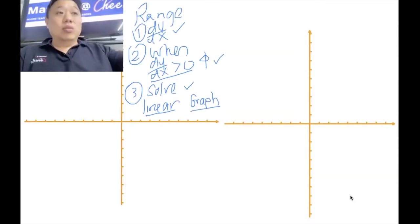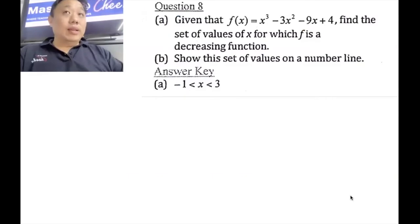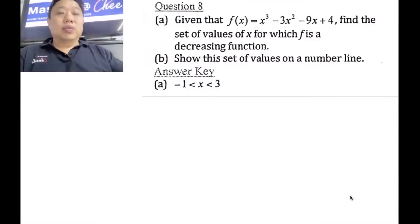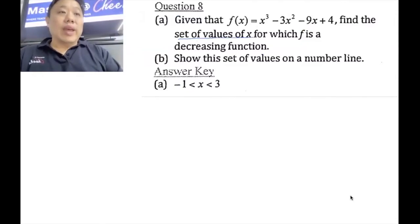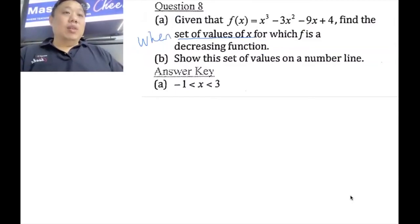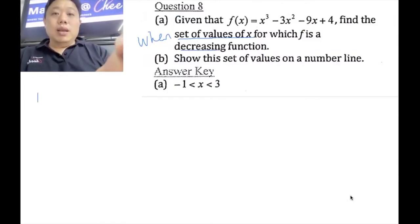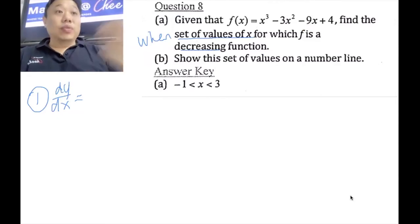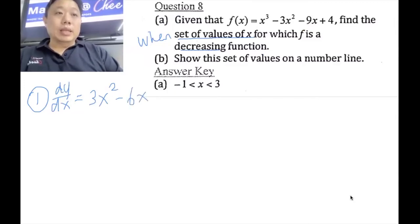Given that f(x) = x cubed minus 3x squared minus 9x plus 4, can you see the keyword? 'Find the set of value of x' — this is asking you when is the graph going to be a decreasing function. So first step: because this is a dy/dx question, go ahead and get your dy/dx. So I'm going to get 3x squared minus 6x minus 9.